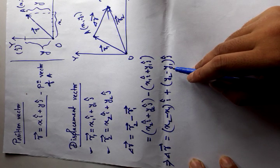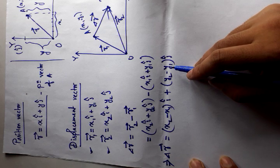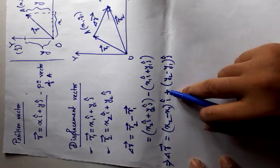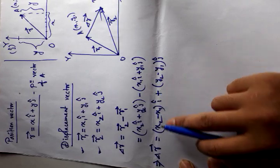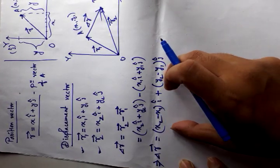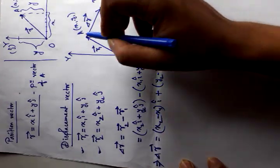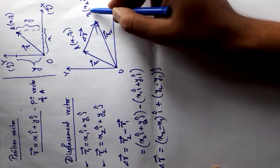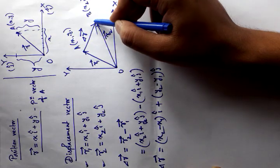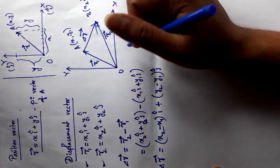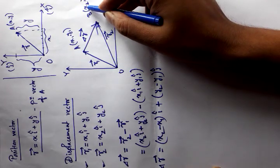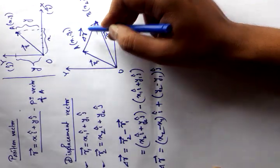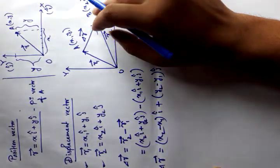After that, the magnitude of the displacement vector — that means it is only magnitude, which equals the distance. So we can write it as the square root of (x2 - x1) squared plus (y2 - y1) squared.